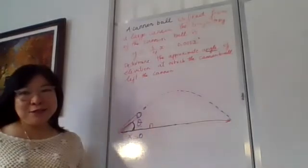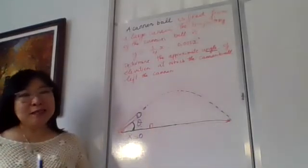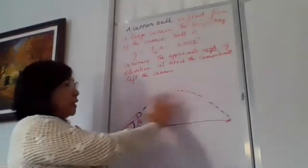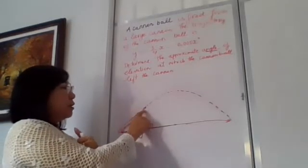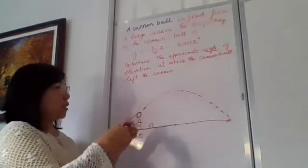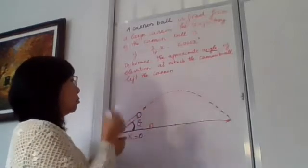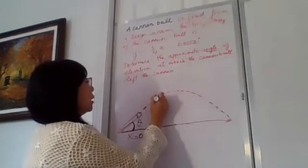So how are we going to solve this question? Now I'm sketching the diagram here, and let's say this is the cannon and then it fires a bullet and then the bullet will go to the sky,